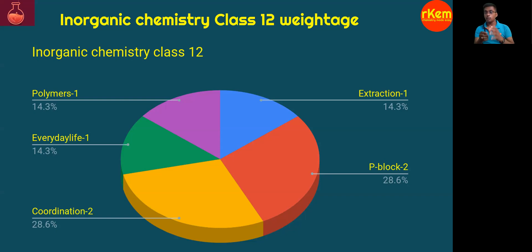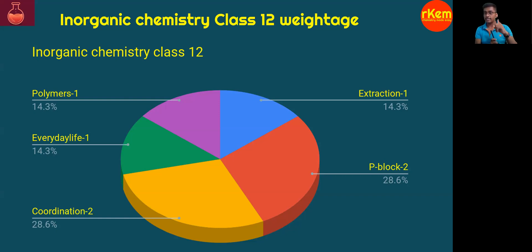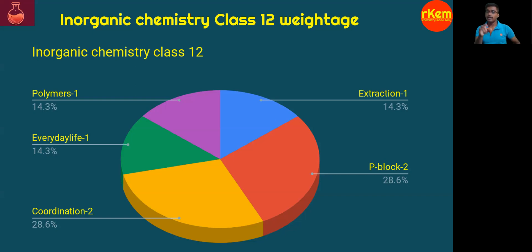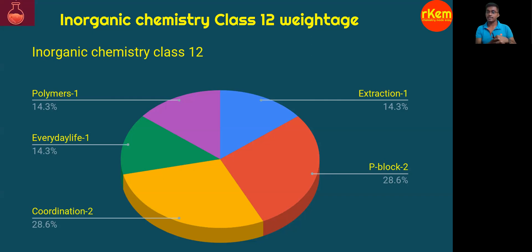P-block class 12 covers groups 15, 16, 17, and 18. Learn oxo acids of phosphorus and oxo acids of sulfur — one question 100% will come from these. The other question could be xenon compounds hybridization from group 18, or from group 17 — chlorine or halogen reaction with hot and concentrated NaOH versus cold and dilute NaOH; these questions are compulsory. Halogens' bond dissociation energy order is also very important, and these were previous MSET questions.